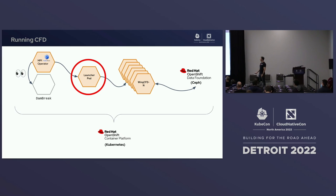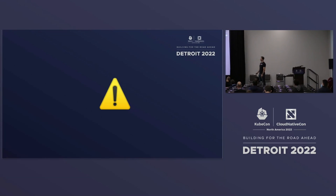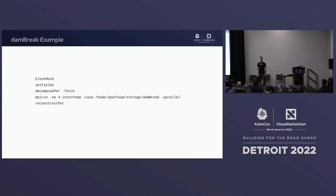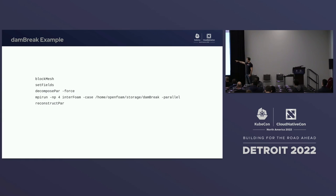What do we actually have to put in here? This is where the rubber finally meets the road. Trigger warning: there's actually code — well, it's barely code. So, this is the dam break example: you do some stuff, you break it up, you run the parallel job — that's the meat — and then you put it back together.